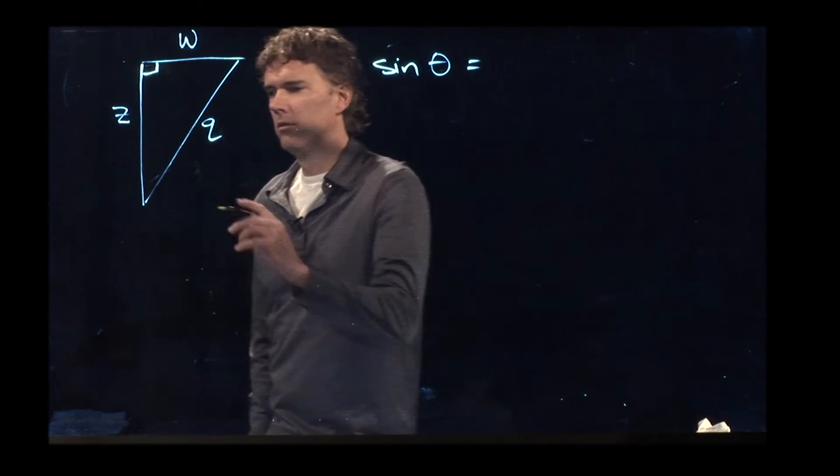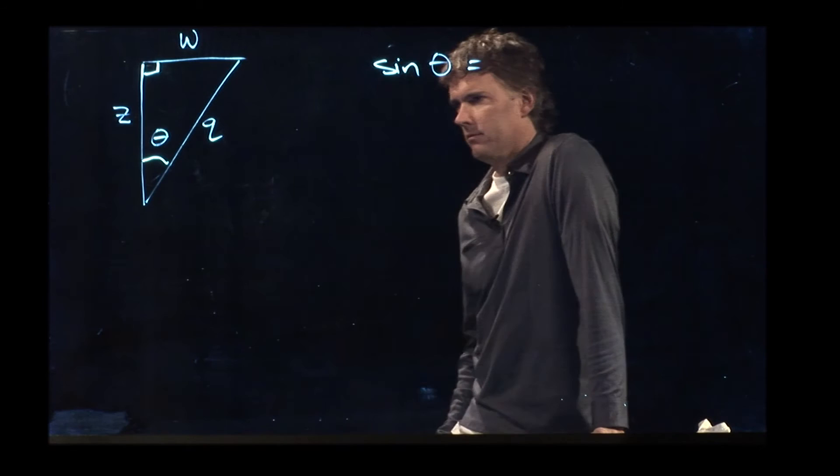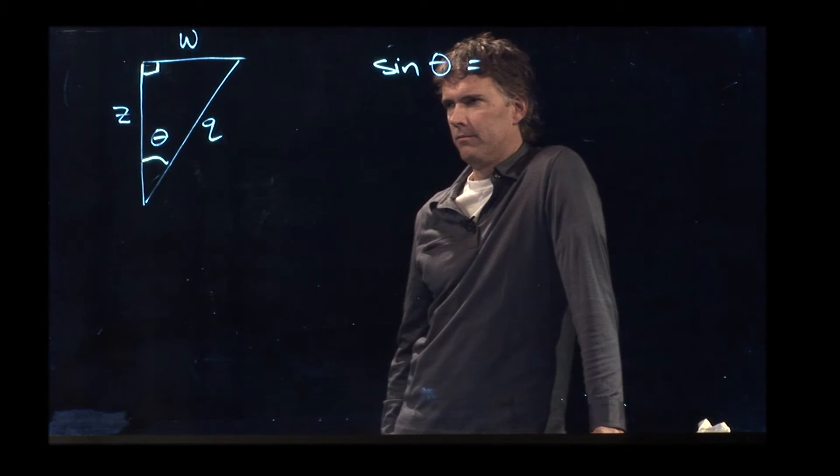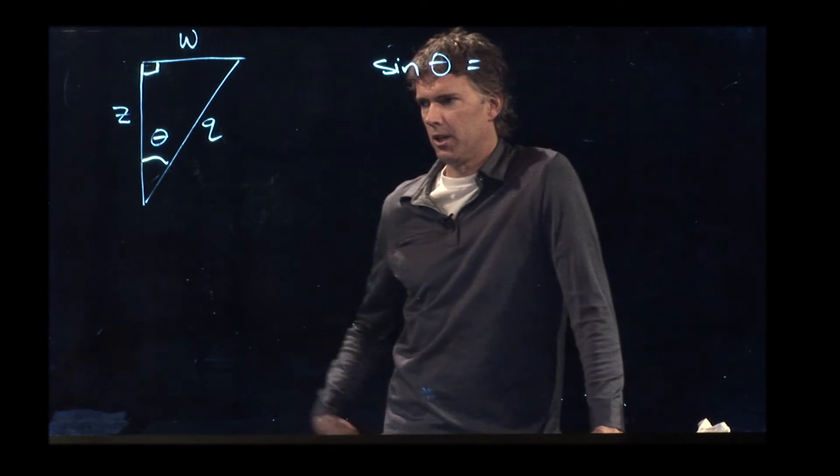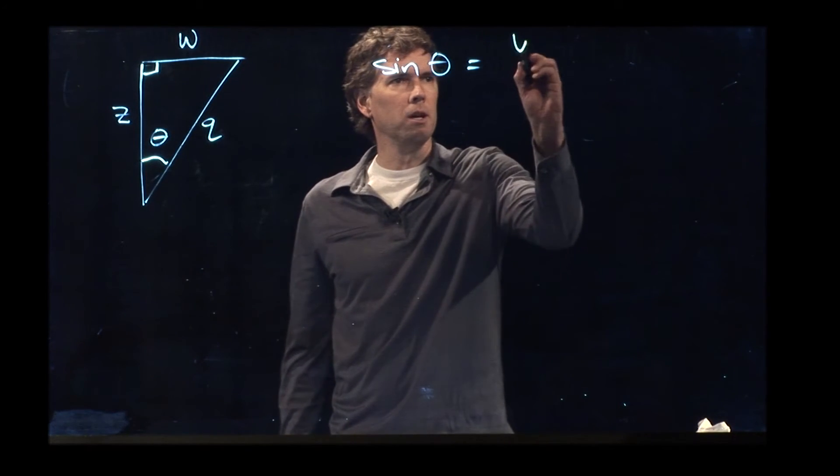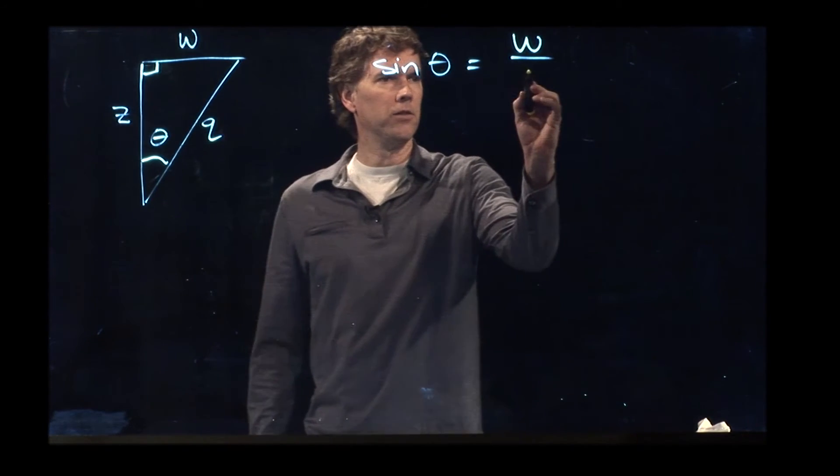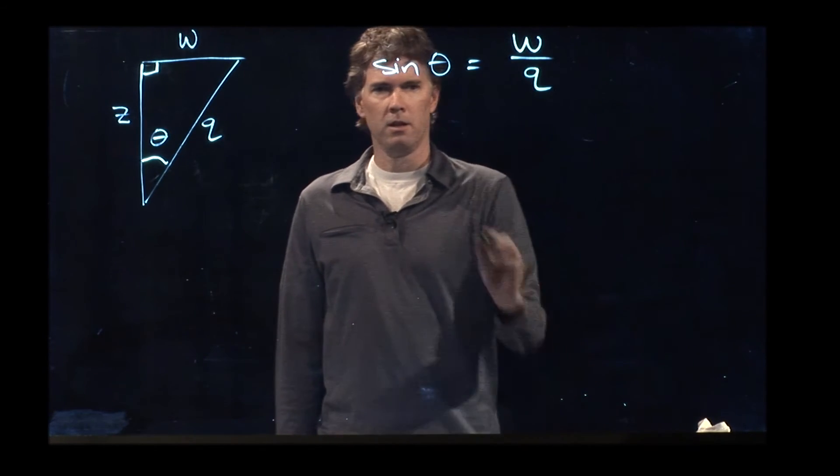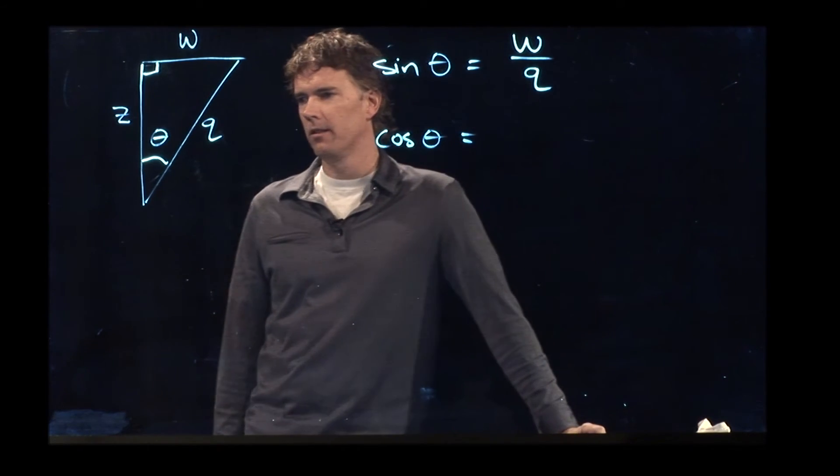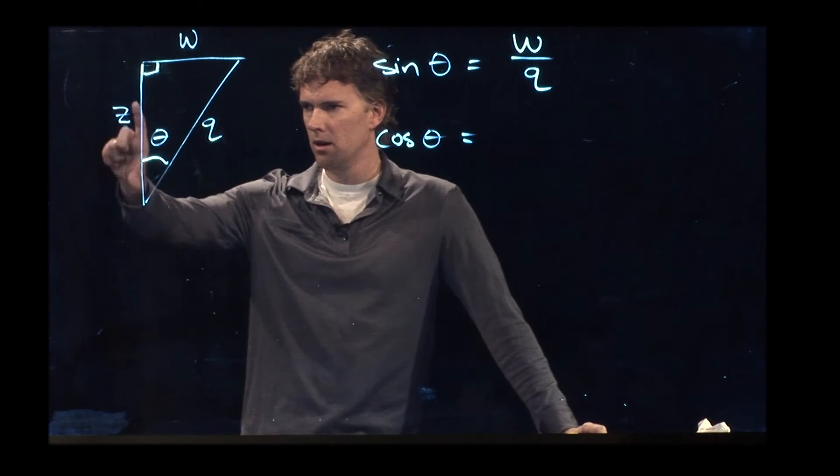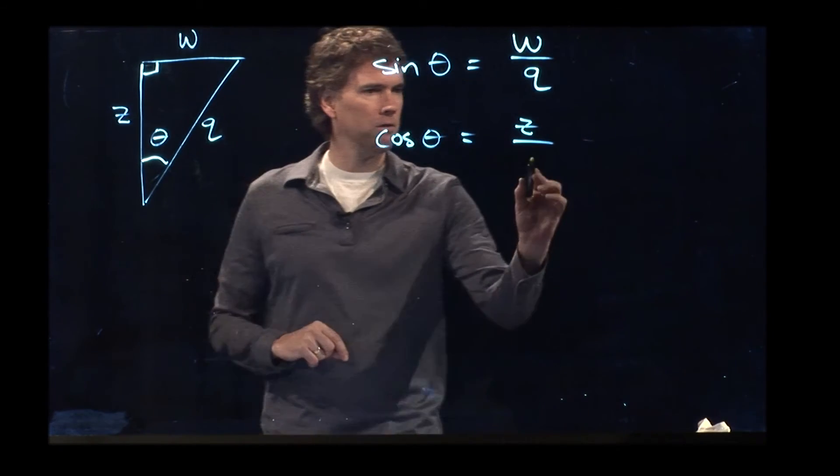So let's say theta is now right there. If that's theta, what is sine of theta? Well, it's opposite, which is opposite the angle, which in this case would be W, over hypotenuse, which in this case is Q. Cosine of theta, we said was adjacent over hypotenuse. The adjacent side is right here, so that would be Z, divided by hypotenuse, which we said was Q.